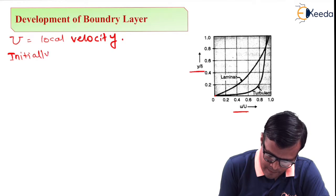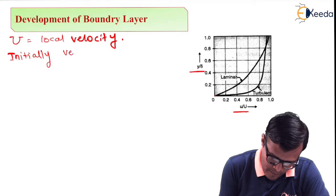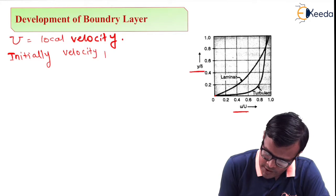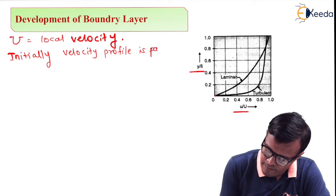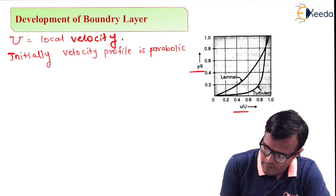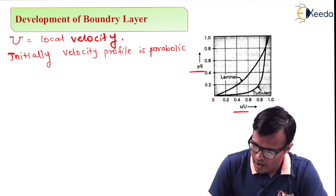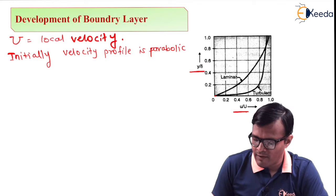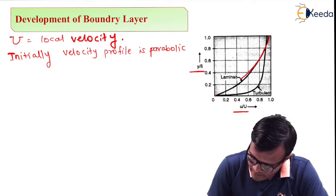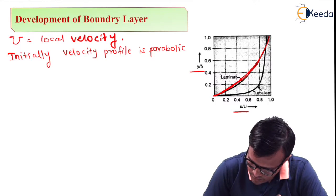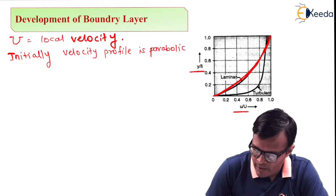Initially, velocity profile is parabolic. If I plot a graph y upon delta versus u upon capital U, then in that case I will get this curve which is parabolic in nature.